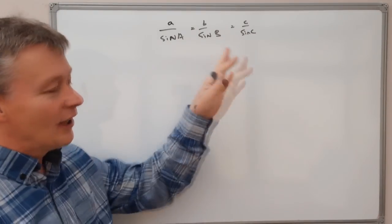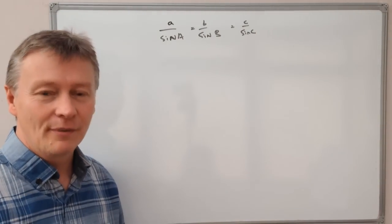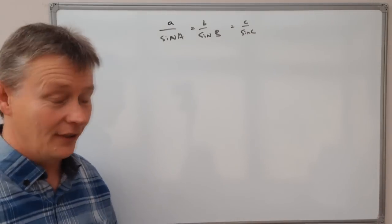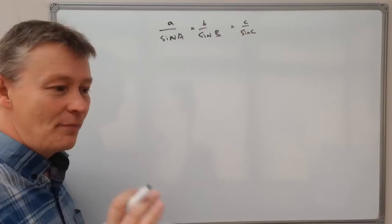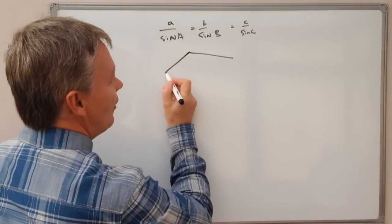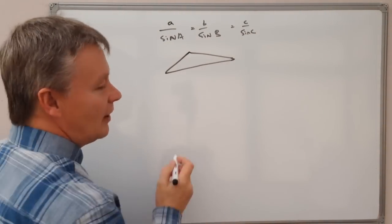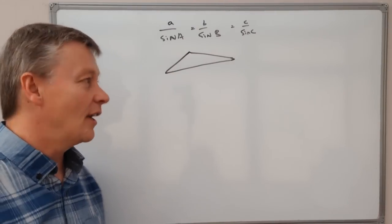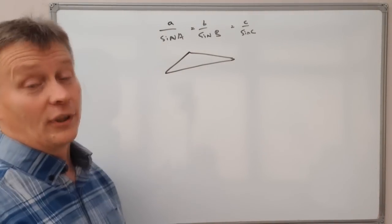So all it is really is the relationship between the angles and sides of a triangle. So what we've got as a typical question will be something like this. And they're usually fairly odd shaped triangles. And they give you a little bit of information and they ask you to calculate.